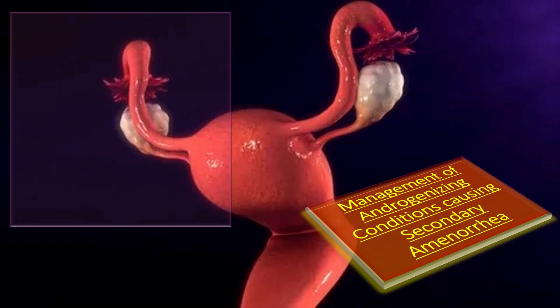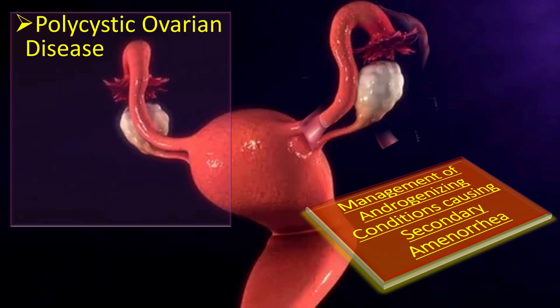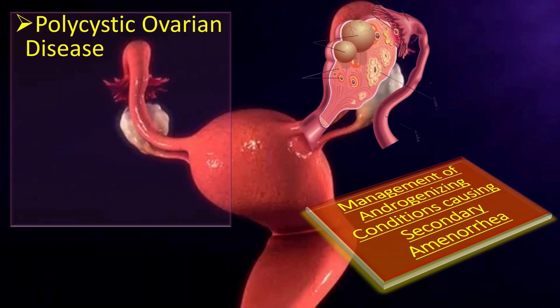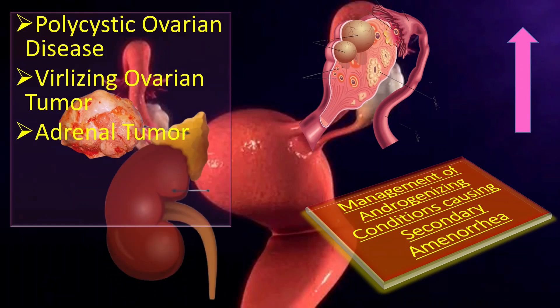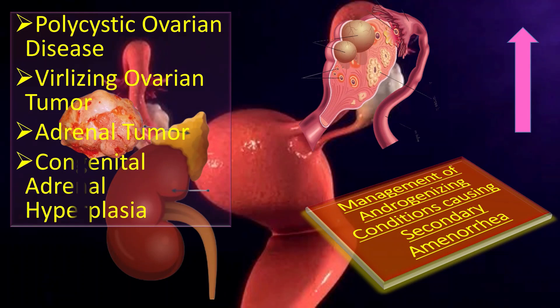Let us discuss the management of androgenizing conditions. Among androgenizing conditions, we include polycystic ovarian disease — for its management, follow the link given in the eye button in the top right corner of this video according to our COG guideline. Second is virilizing ovarian tumor, which may require surgical resection. Third is adrenal tumor, which is also best managed by surgical removal. Next, congenital adrenal hyperplasia responds to steroids and the patient can be made fertile with ovulation induction.